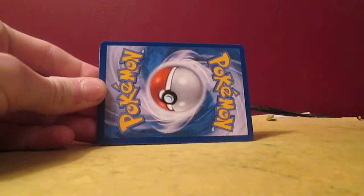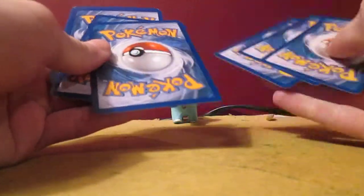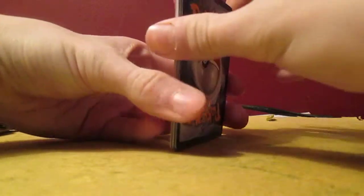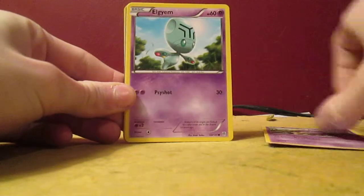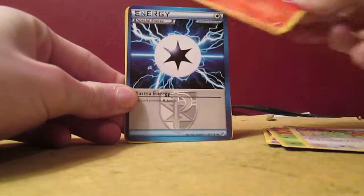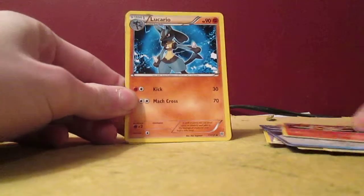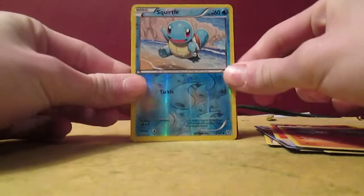Okay, there's the code card. Please a holo or ultra rare. Let's see what I got here. I got a Koffing, Elgyem, Sewaddle, Doduo, Pansear, Plasma Energy, Monferno, Lucario. Oh cool, Squirtle reverse. I like Squirtle quite a bit, that's pretty cool.